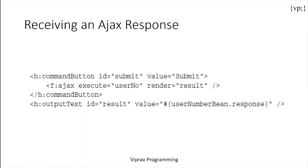Then there's receiving an AJAX response. The handling of the response is defined by the render attribute of the f:ajax tag. The render attribute identifies an output text component to display when the button component is clicked — the default event for a button. You can also specify events like mouse hover or long press, but the default is usually just a click.